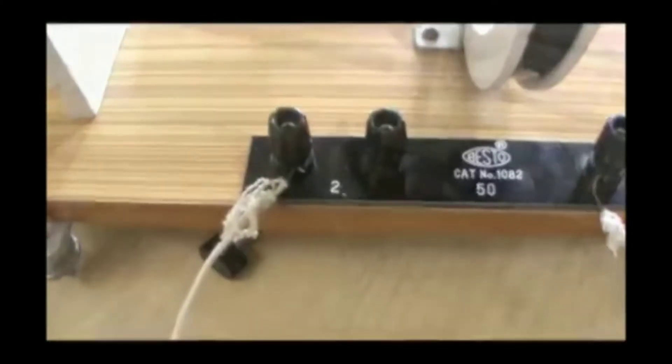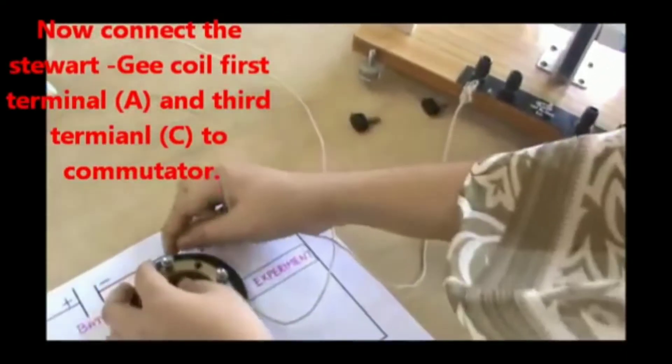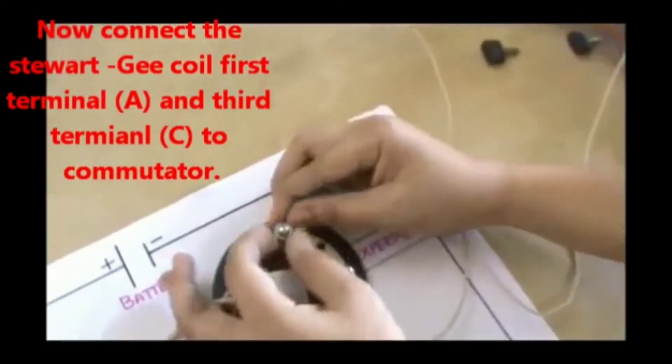Now connect the Stewart and Gee coil first terminal A and third terminal C to the commutator.